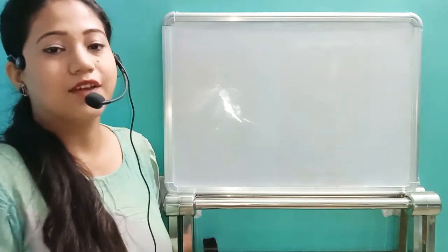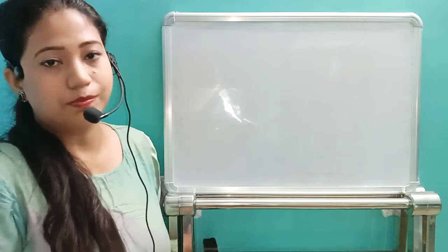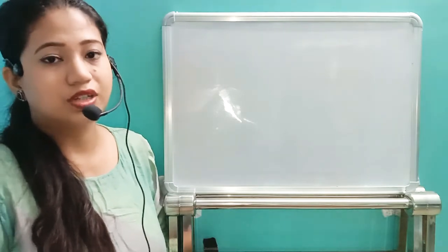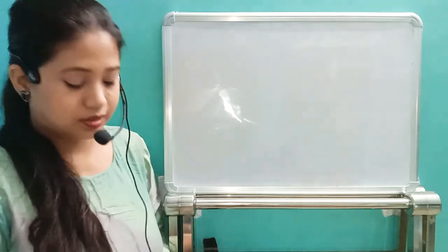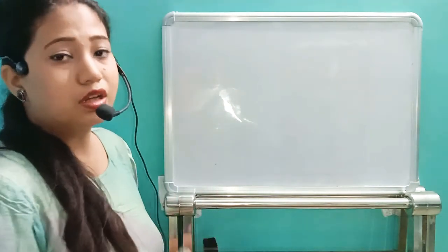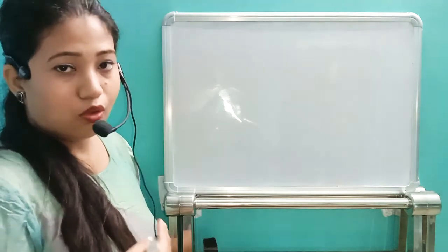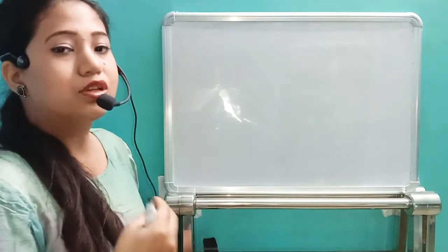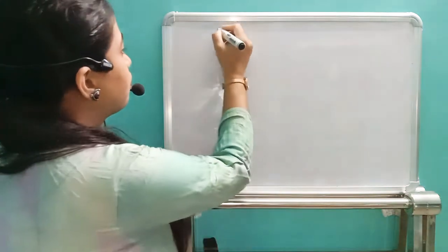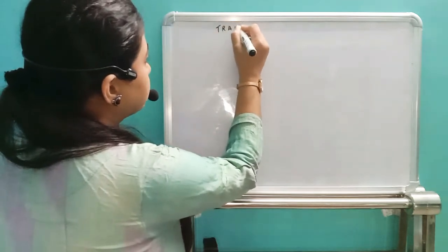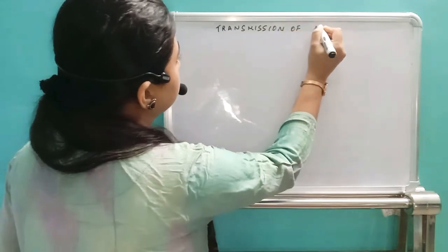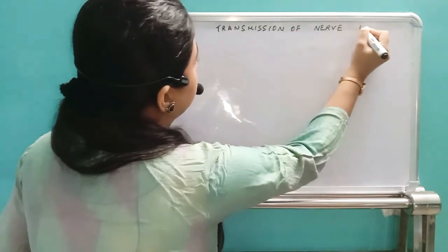Hello students. Last day we have seen the conduction of nerve impulse. Today we are going to start the next part of the chapter neural control and coordination — that is transmission of nerve impulse. We have seen how the nerve impulse propagates within the neuron or within the nerve. Now we will see how the neuron will transmit this impulse from one neuron to the next neuron. This will be called as the transmission of nerve impulse.